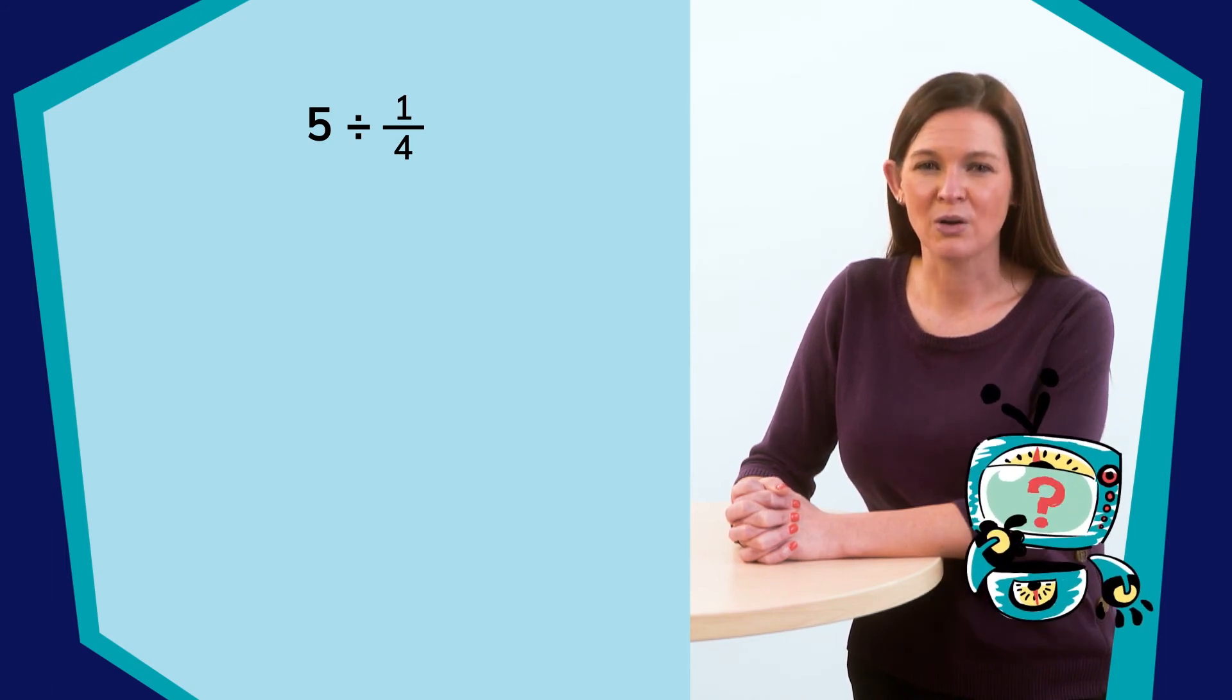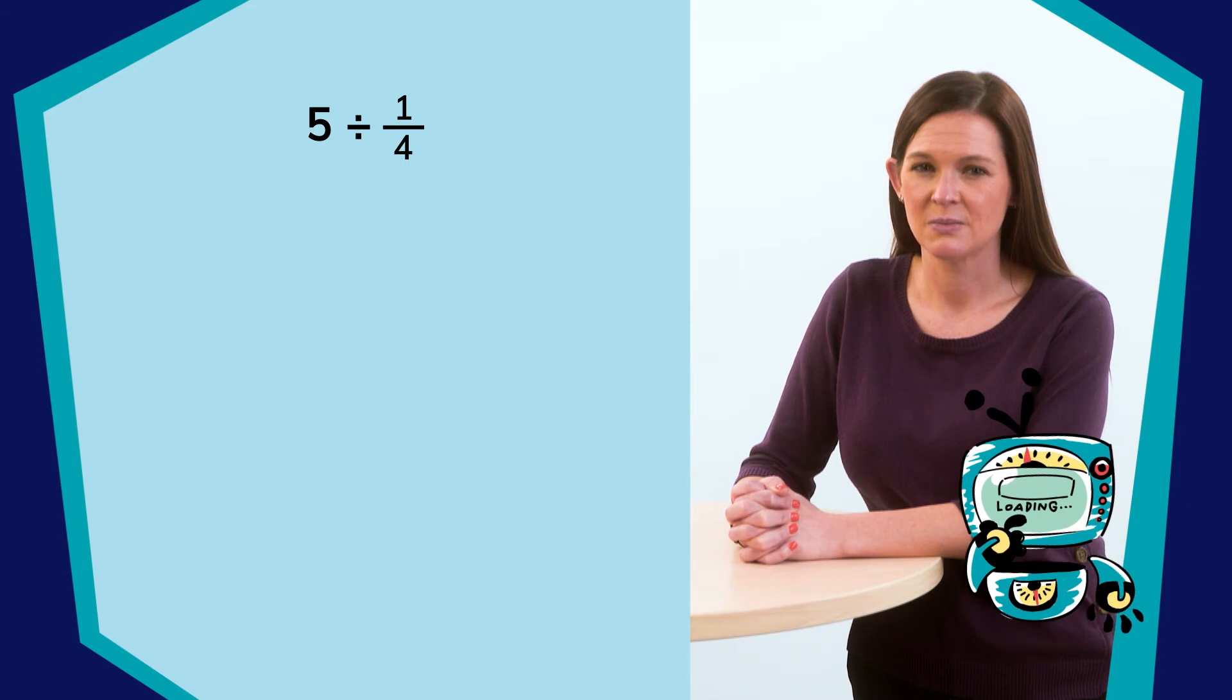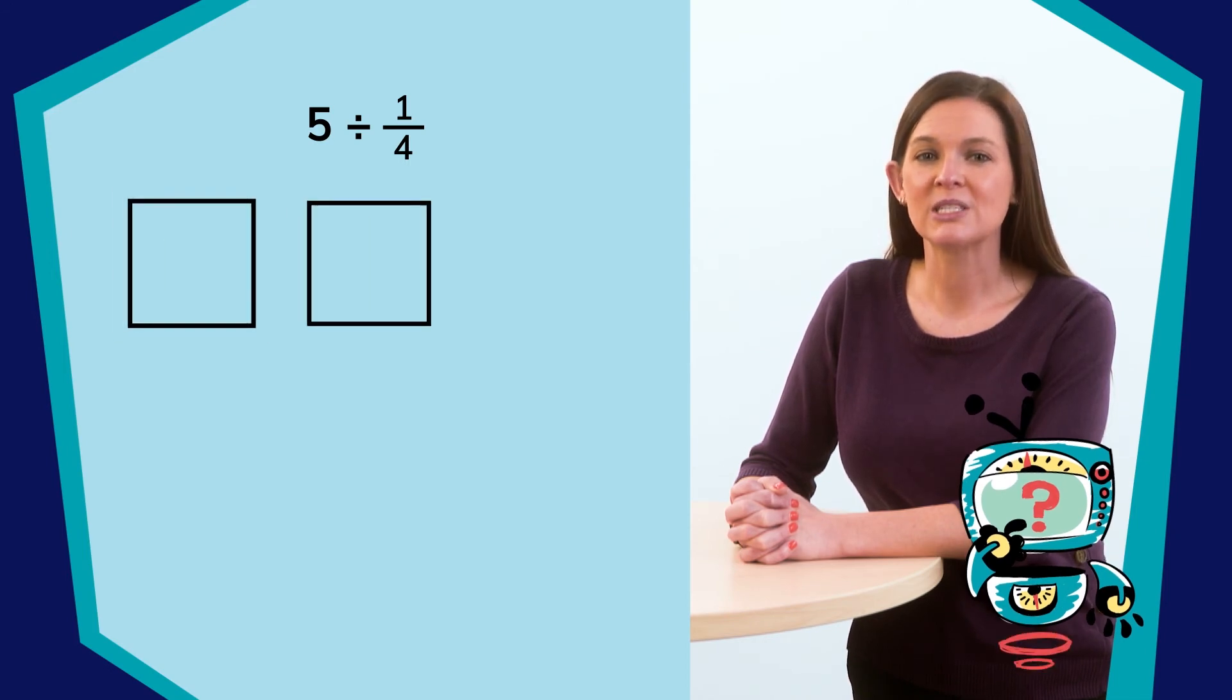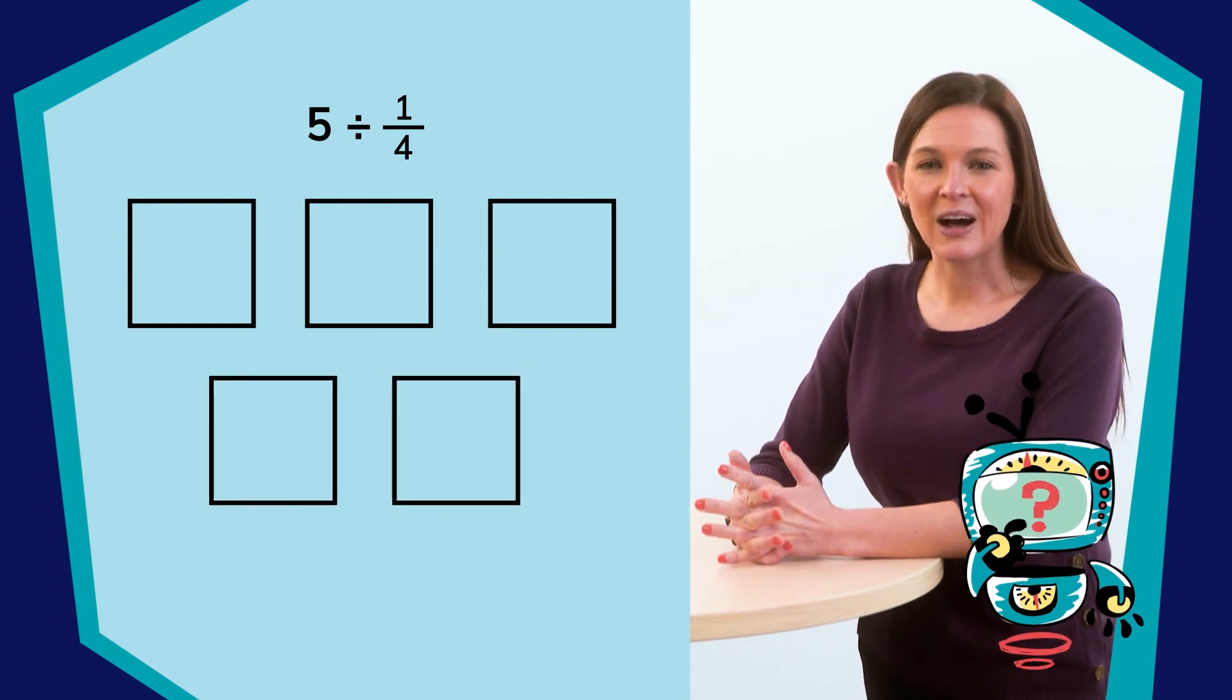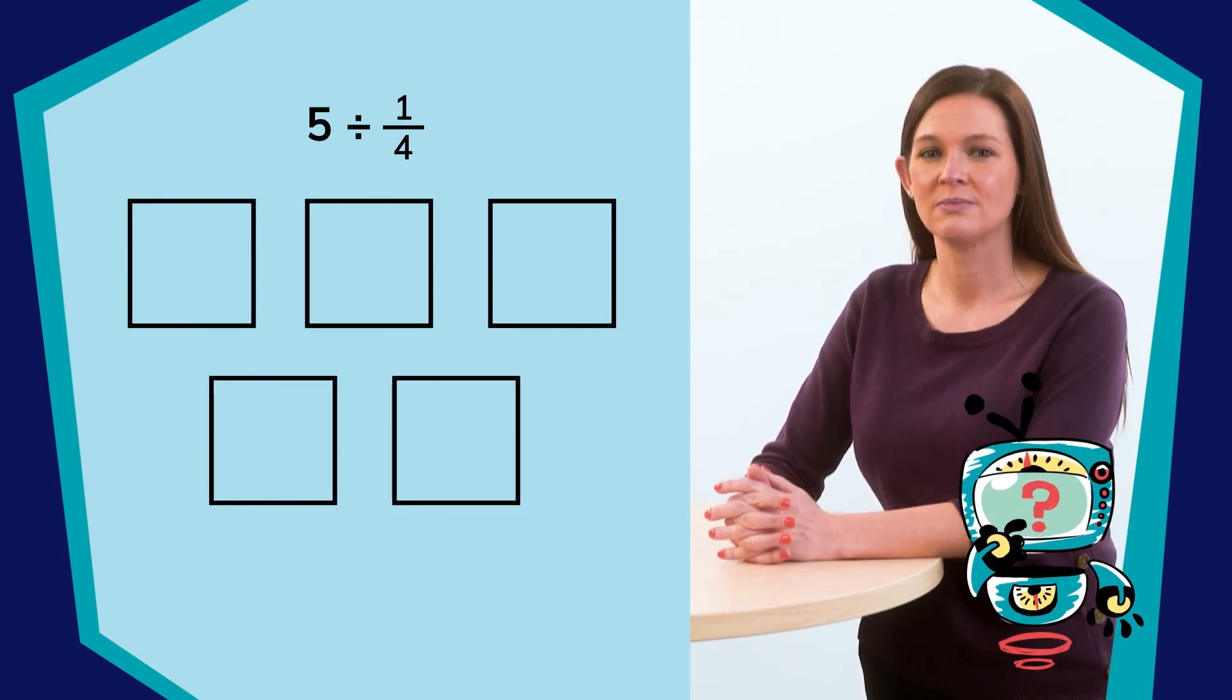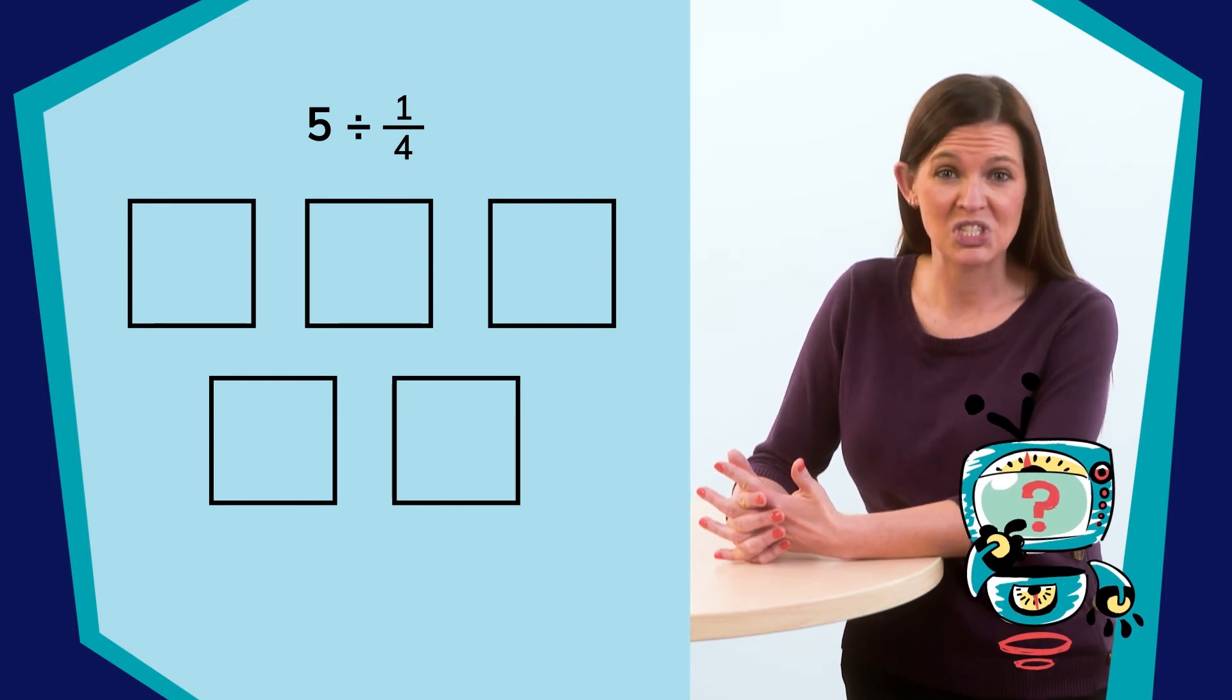How can I draw a model to represent this? Nice thinking. I would start with what I am dividing, the five bunches of grapes. Let's represent that with these five squares. Now, I need to divide this into groups of one-fourth. After all, that's what division is, the dividing of an amount into equal groups. So, how could I do that?